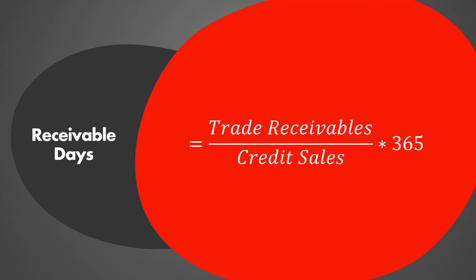Not all companies actually sell on credit, especially retailers — Marks and Spencer, Sainsbury's, Lidl, etc. — they do not sell on credit. So for retailers this ratio does not make sense. However for manufacturers, those companies who do sell on credit, for them this ratio is very important because this is their money which is in other people's hands and they need to collect it on time.